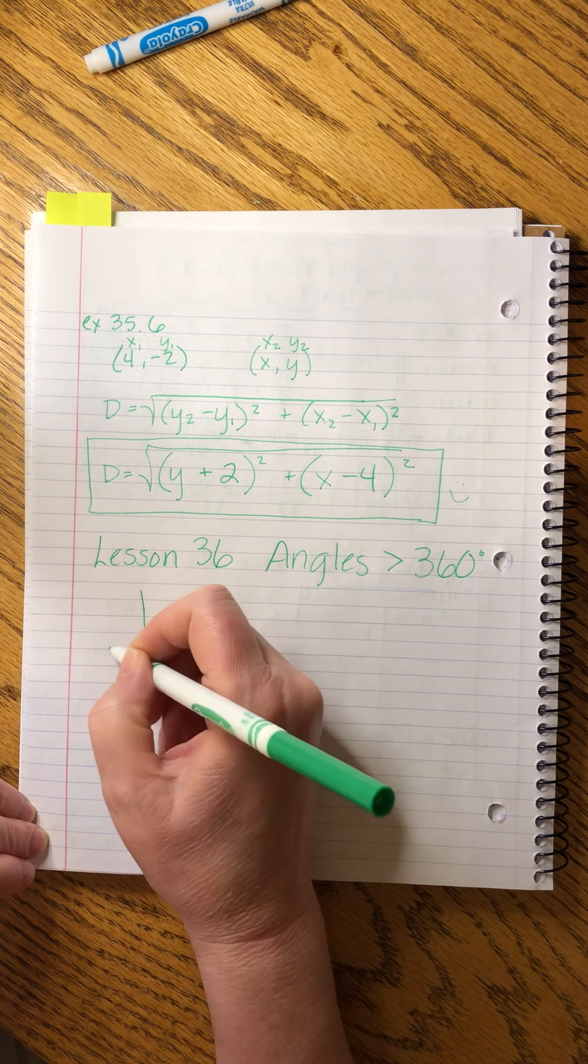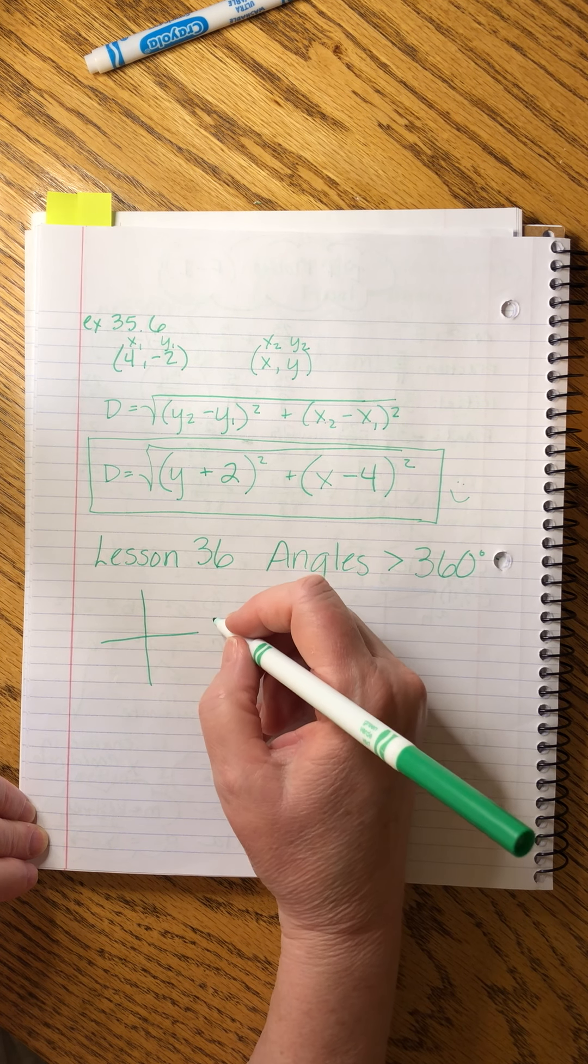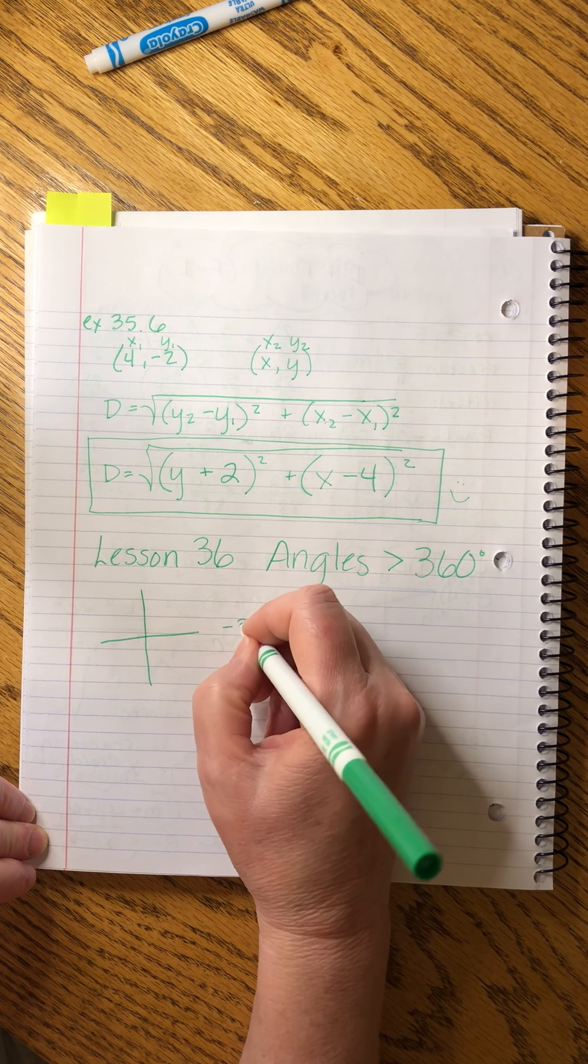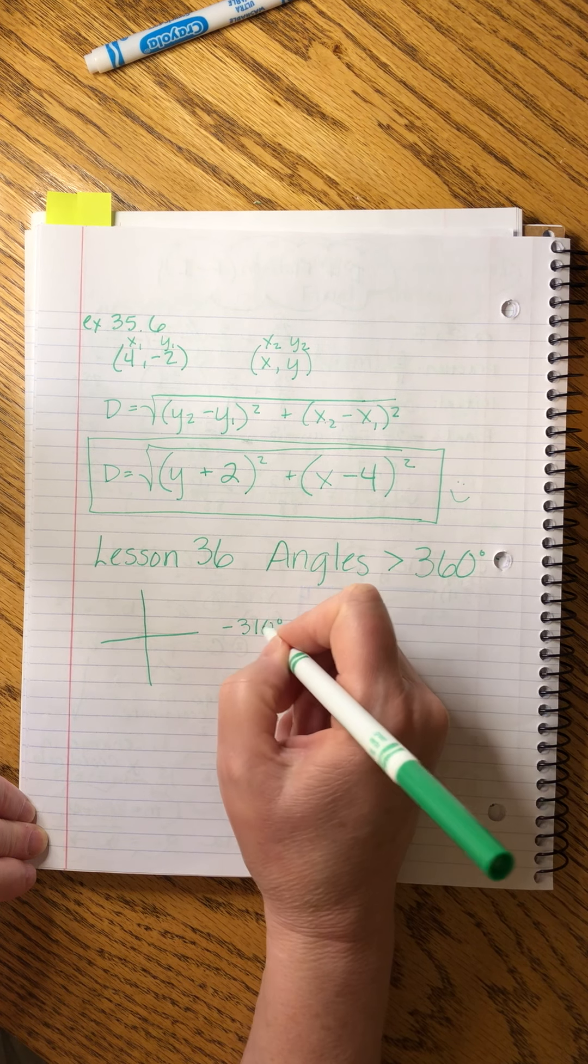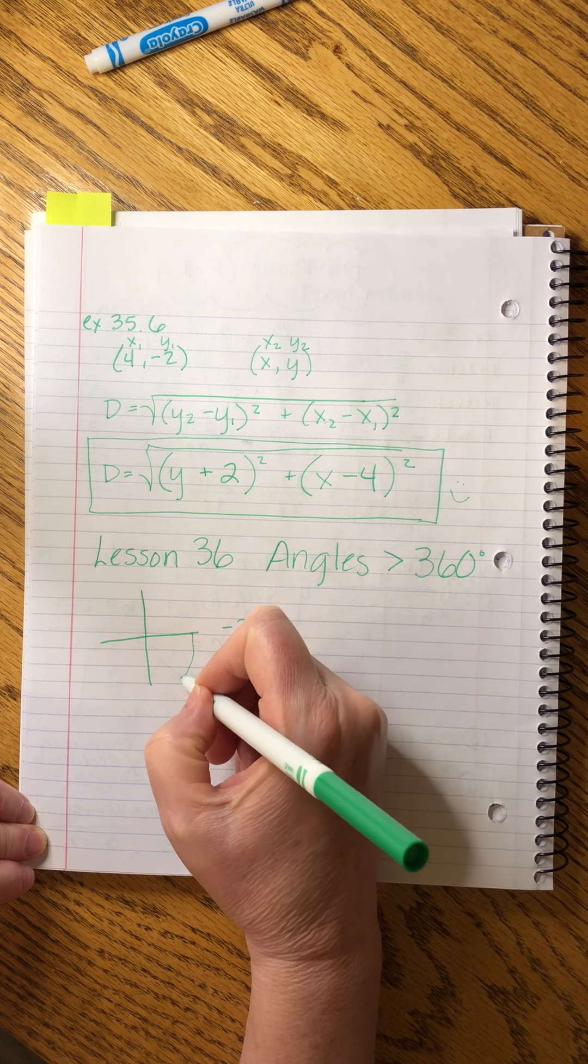We've already done something like this. We've said what if our angle is negative 310. A negative angle tells us to start measuring here. We start counting off as we go.